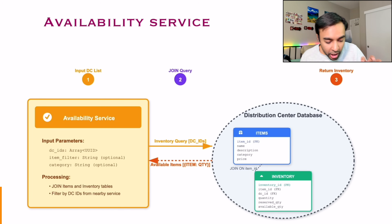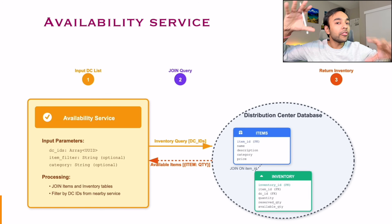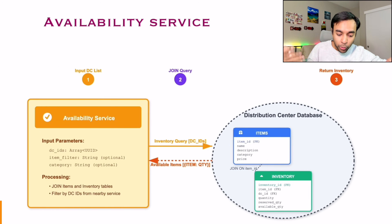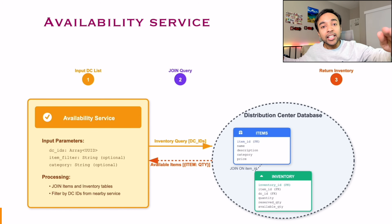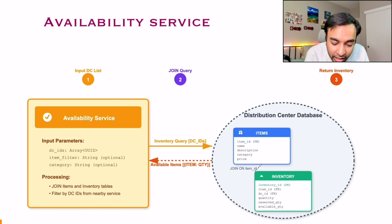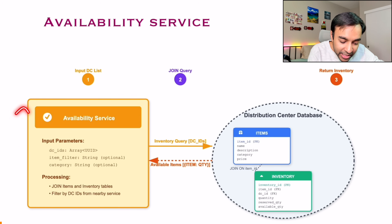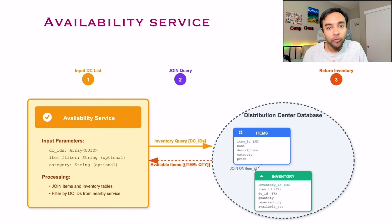To give you a recap — we had a list of all of the distribution centers, you determined that these are items available at all of these distribution centers and this works for me. You can then return this inventory, and the availability service is going to determine that this distribution center can fulfill my order.